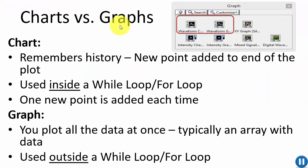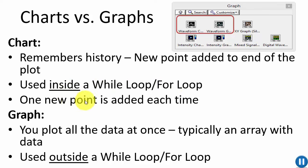Charts versus graphs: charts remember the history, with new points added to the end of the plot inside a while or for loop — one new point each iteration. A graph plots all data at once, typically as an array, and is used outside a loop.